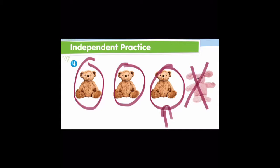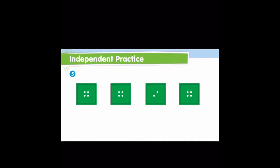Let's take a look at this row. We have four green buttons — they are all in the shape of a square. But which one is different than the others? Good job — it's this one right here. What makes it different? It has only two holes, where the other buttons have four holes. So this one here is different — you are going to put an X on it. And the other buttons are alike, so you are going to circle them.